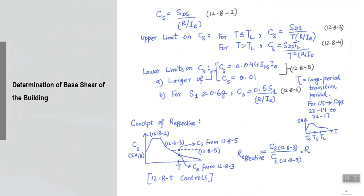There are several expressions for Cs available. The main expression is 12.8-2, which states Cs = SDS / (R/I). You already know what SDS, R, and I are. This is the main expression for calculating Cs, but there is also an upper limit and a lower limit. Once you calculate this Cs, you check the upper limit on Cs and also check the lower limit on Cs.